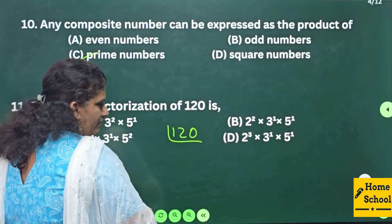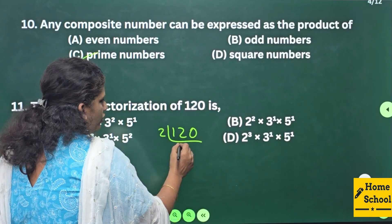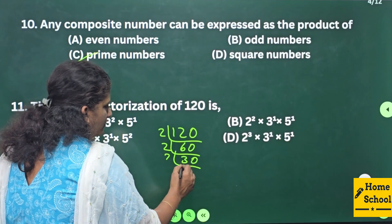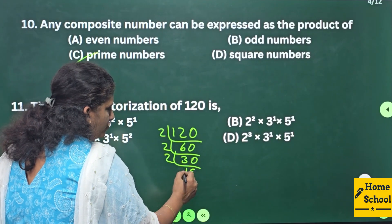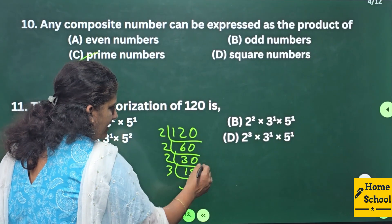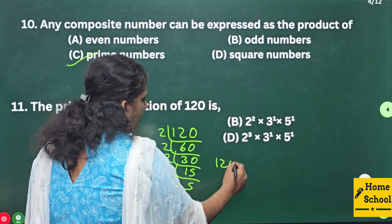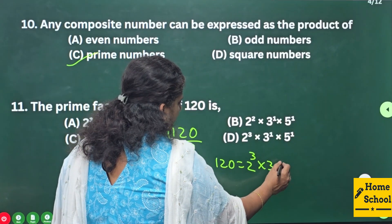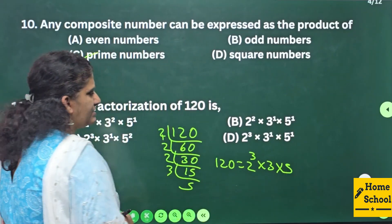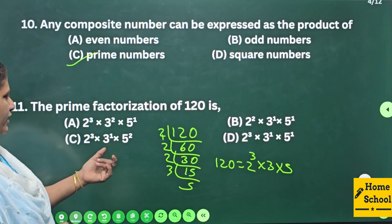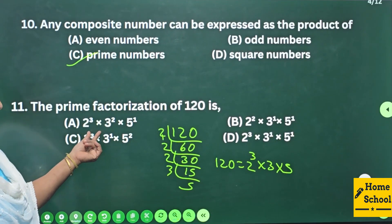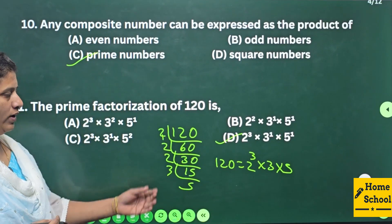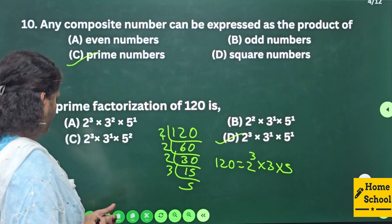120 in prime factors: 2×60, 2×30, 2×15, 3×5. So 120 = 2³ × 3 × 5. Where is this answer? 2³ × 3 × 5 — yes, your option is option D. You can also write 3 as 3 power 1.